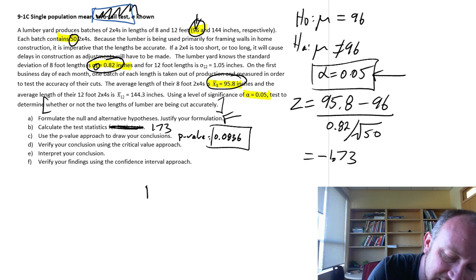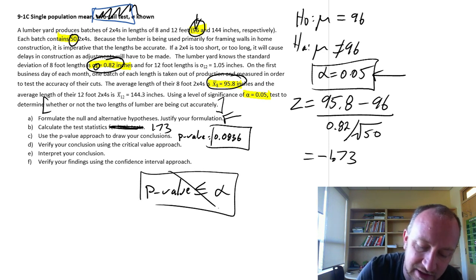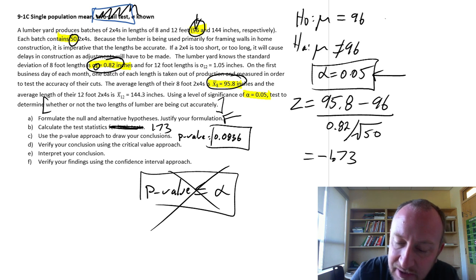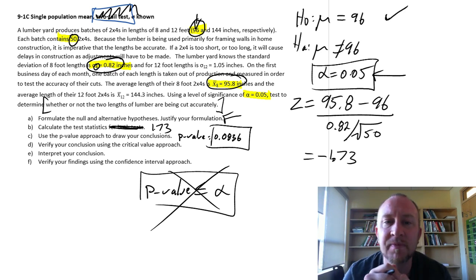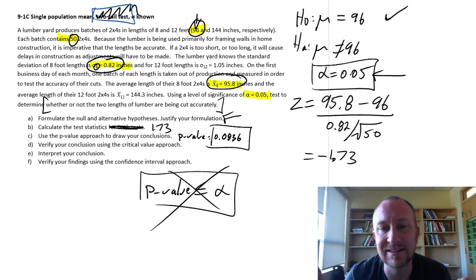Because our rejection rule, remember that rejection rule, always is to reject if the p-value is less than or equal to alpha. In this case, it is not. And so I am going to support the null hypotheses. My evidence shows that we appear to be on target. Or at least I can't say that it's different than 96 inches. So that's it for our conclusion here.